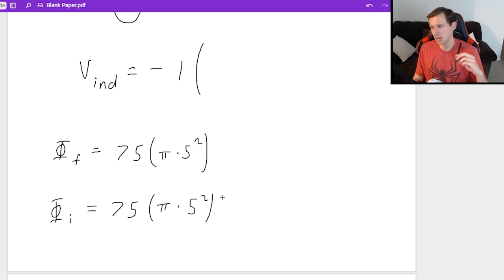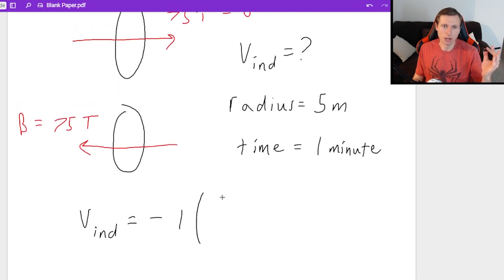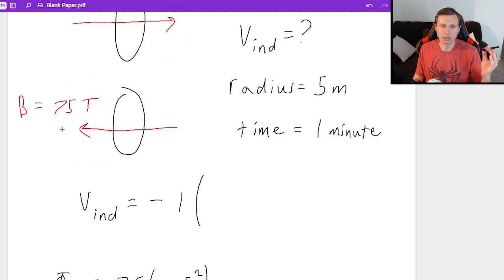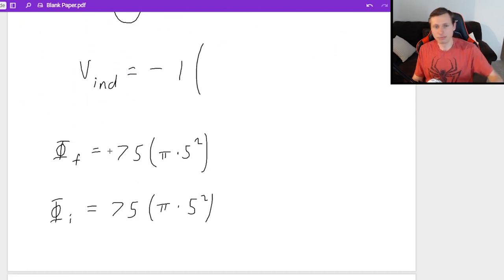Well, one of these two are wrong. The problem is that we did not consider the direction. What do I mean? Well, isn't this final magnetic field pointing to the left, which we normally consider negative? And if that's the case, that should not be positive 75. That should be negative 75, which will change the math. Let me show you how.